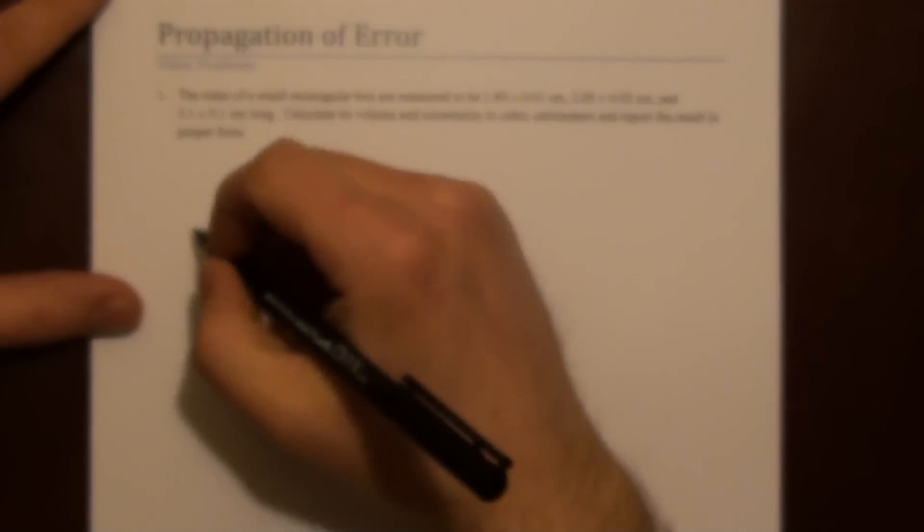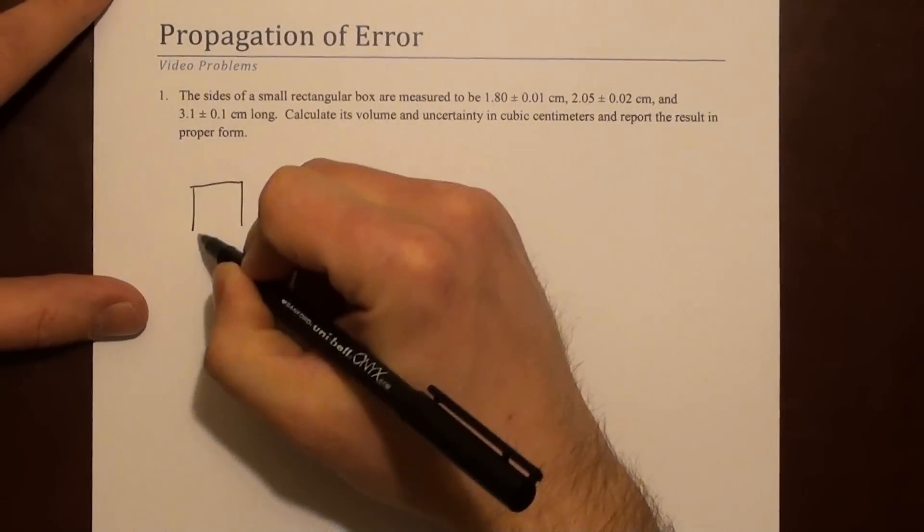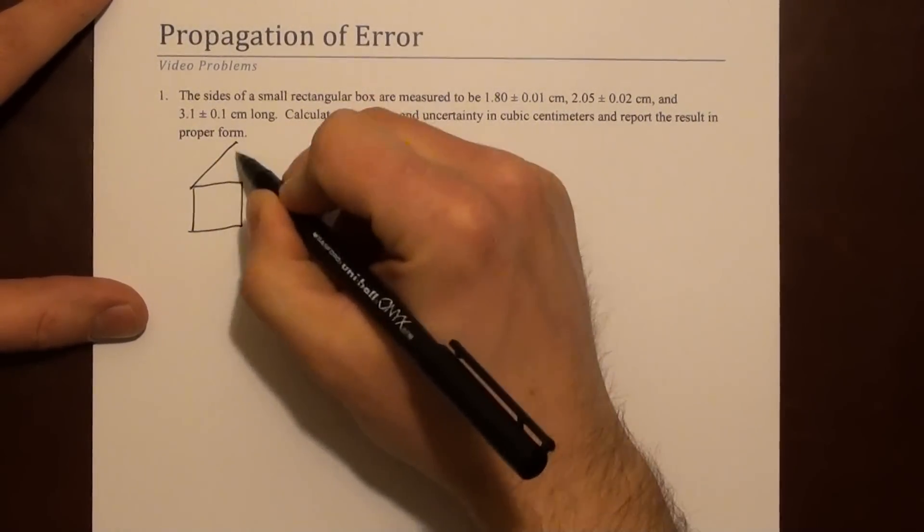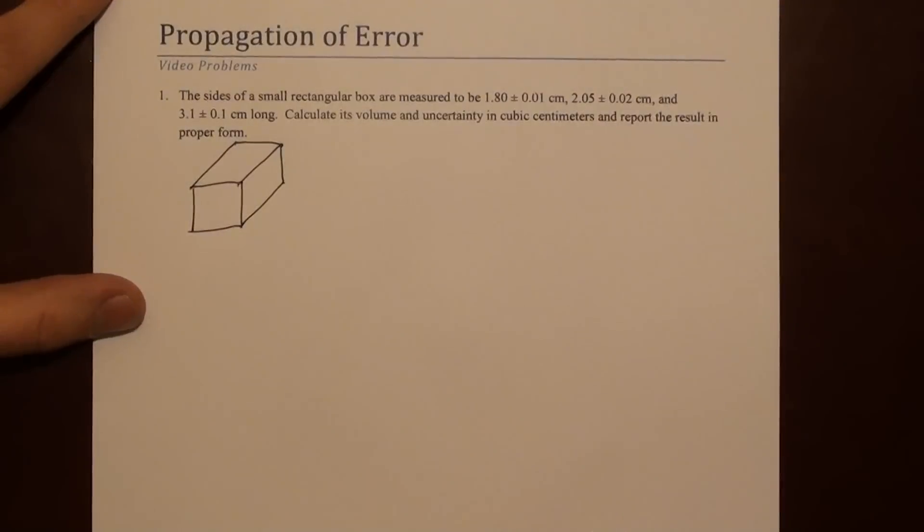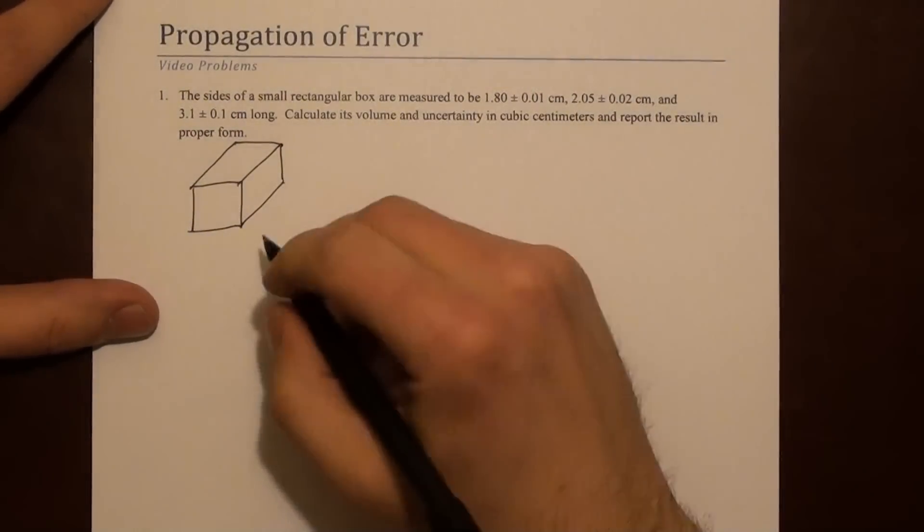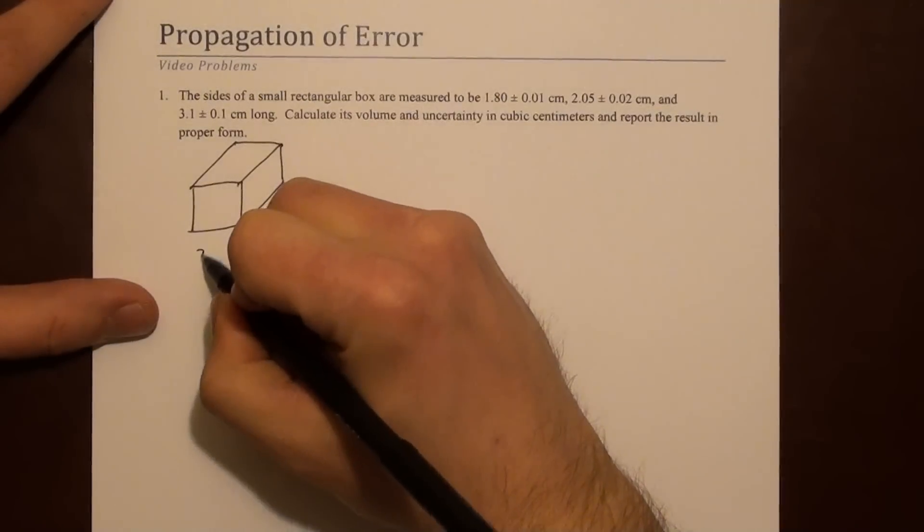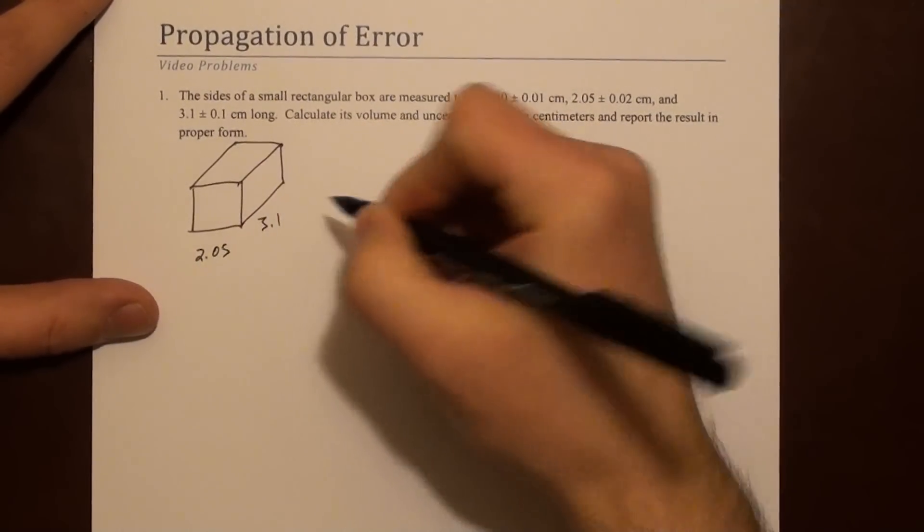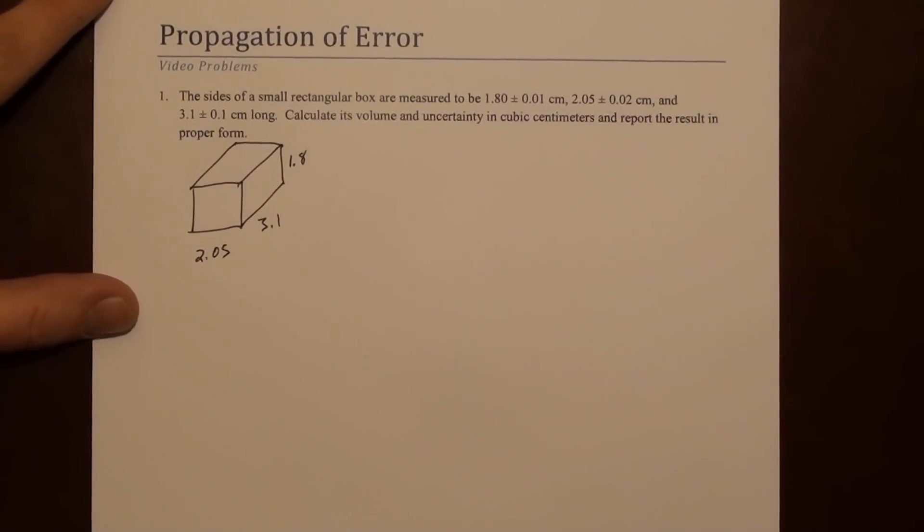I'm going to draw a picture just so that it's more clear in my head. So here's a small box, not necessarily to scale. Let's label some of these sides. We've got 3.1, maybe 2.05, and 1.8. So we can call those a length, a width, and a height.